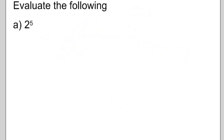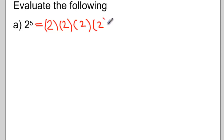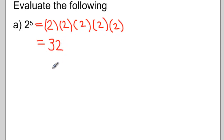So let's evaluate a few power questions. 2 to the exponent 5 is the same as 2 times 2 times 2 times 2 times 2 — the number 2 multiplied by itself 5 times. If I evaluate this in my head or on my calculator, 2 times 2 times 2 times 2 times 2 is equal to 32. So 2 to the exponent 5 is equal to 32. When we write an expression with numbers separated by brackets with no addition or subtraction symbol in between, that's understood to be multiplication.